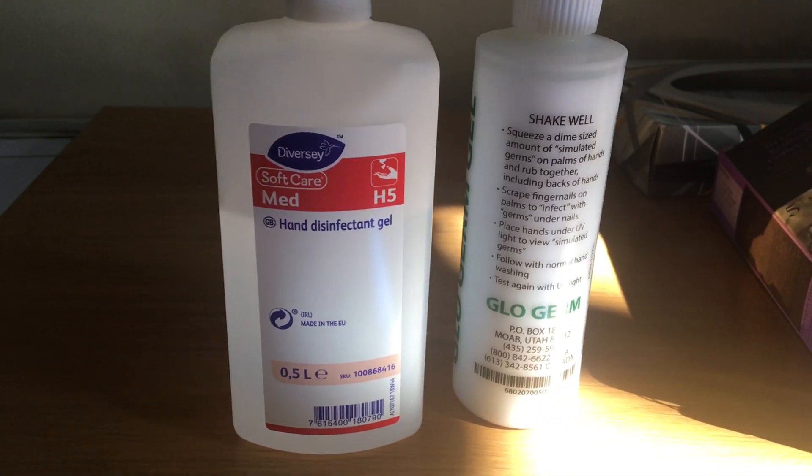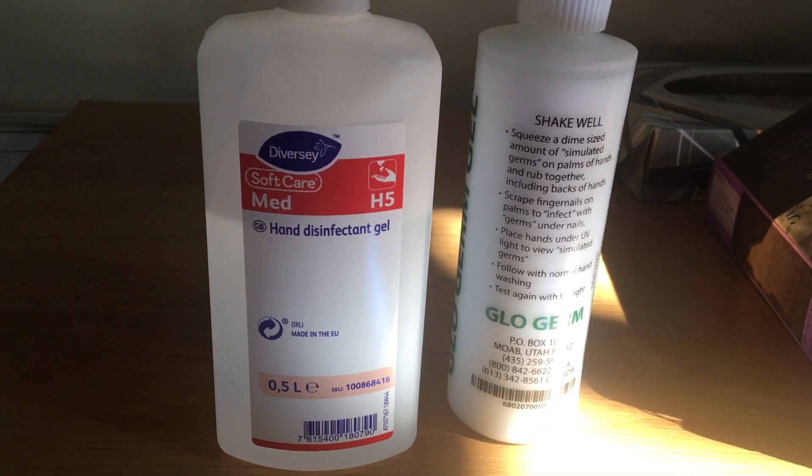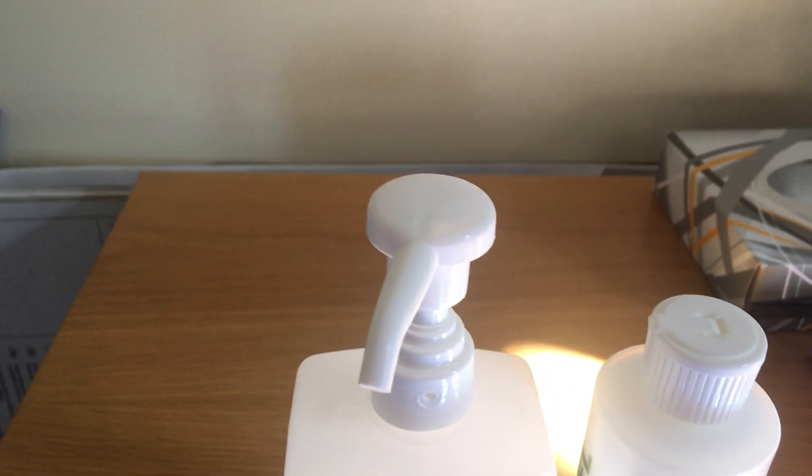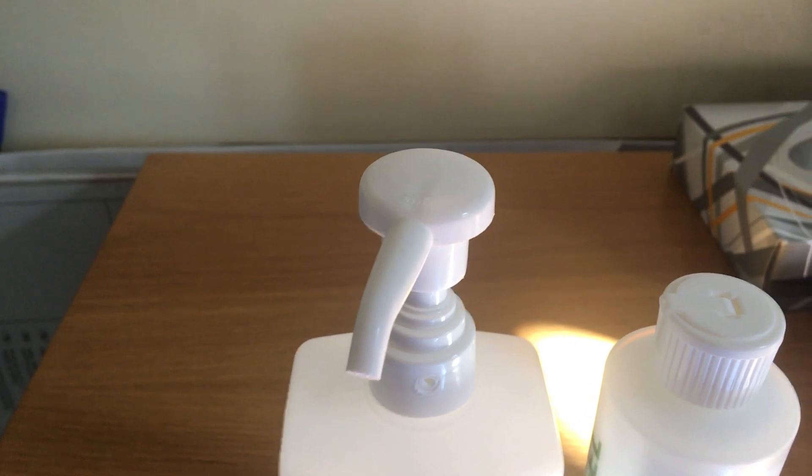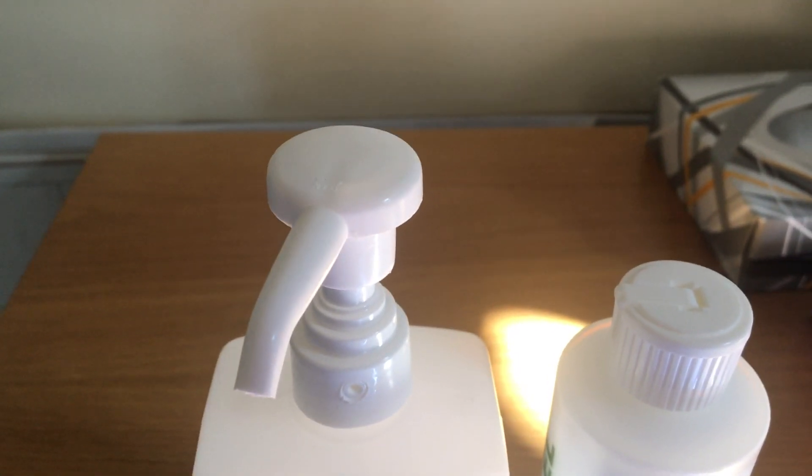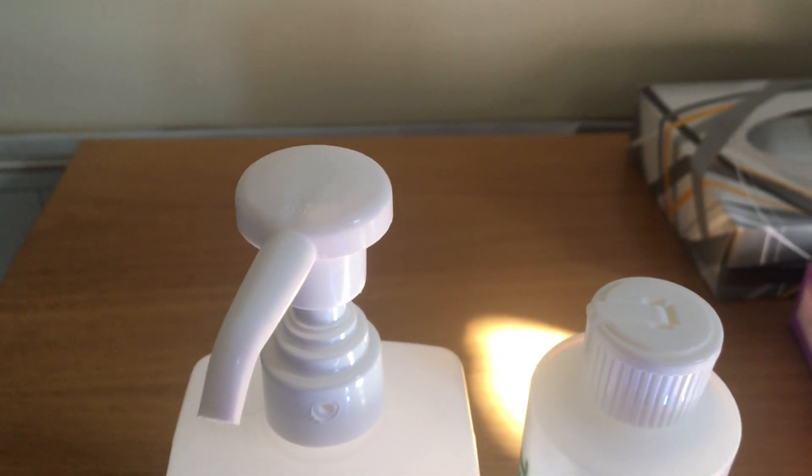Two days ago I put a dot of glow germ fluorescent dye on top of the alcohol gel dispenser to simulate a person carrying COVID-19 on their hands and contaminating the top of the alcohol dispenser.